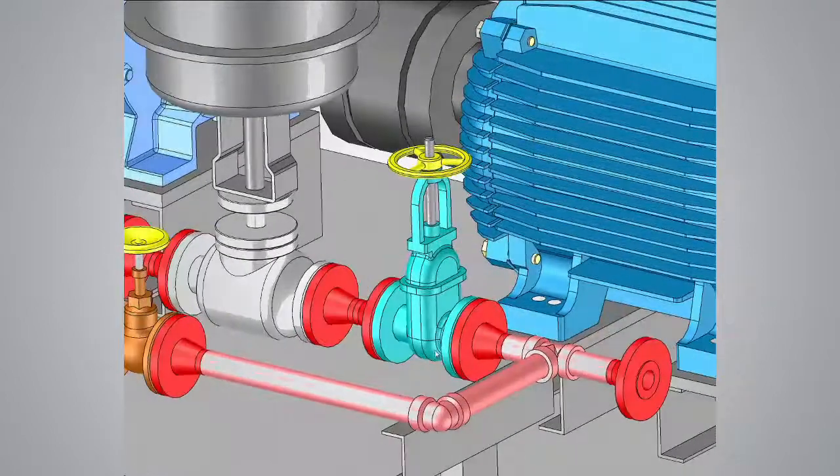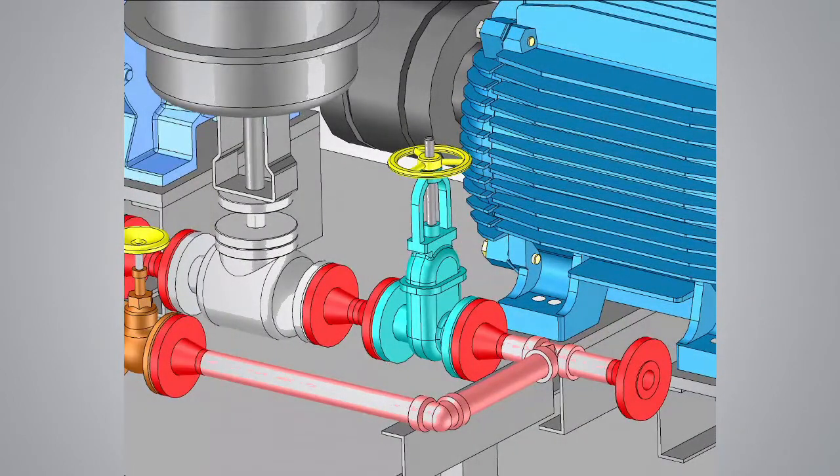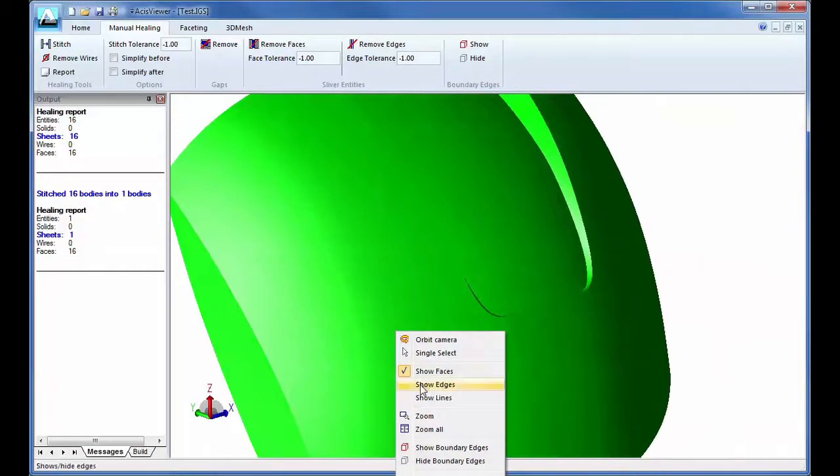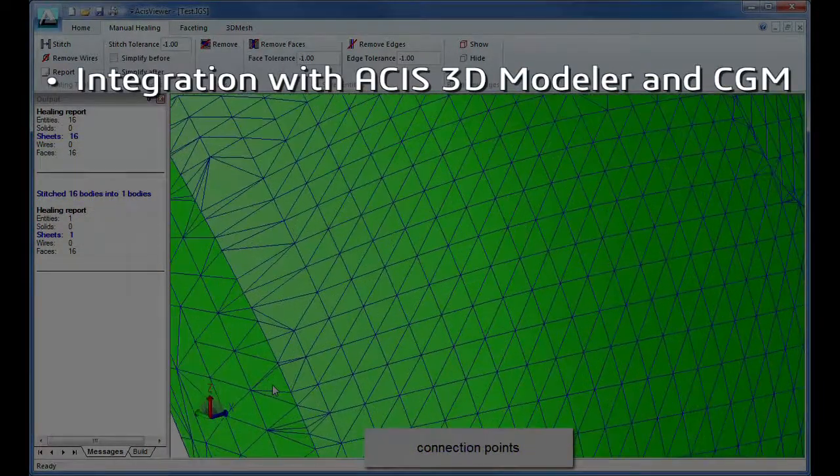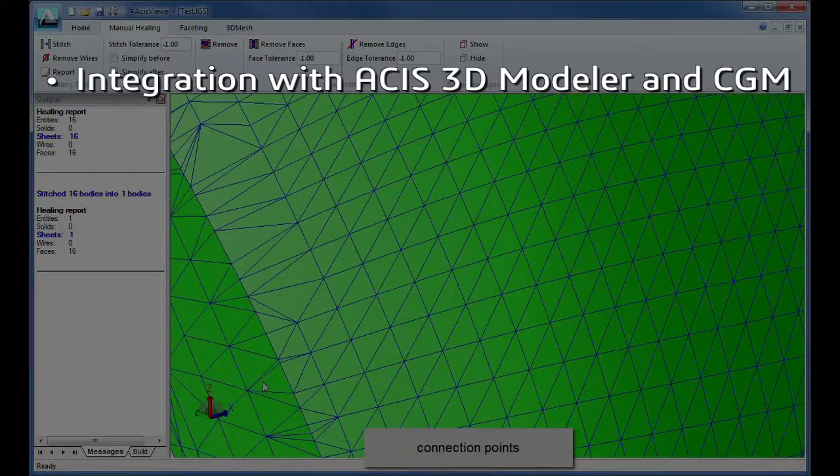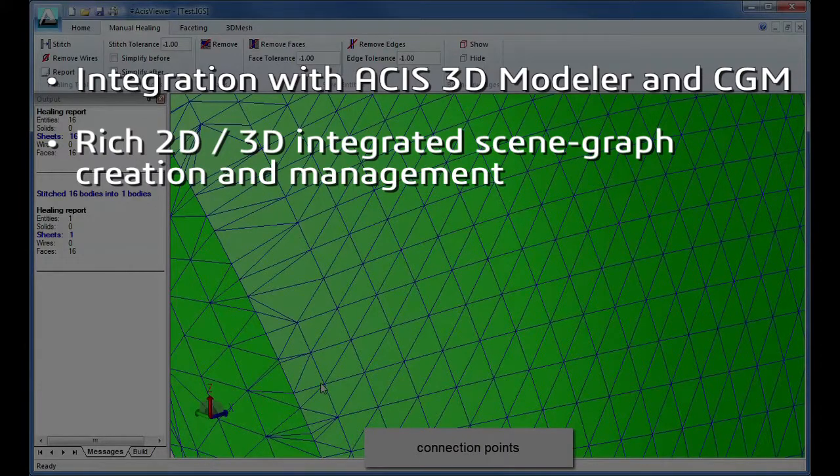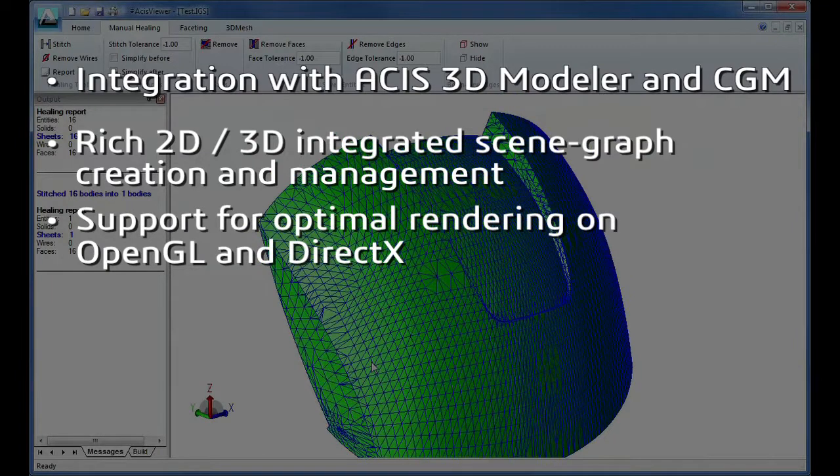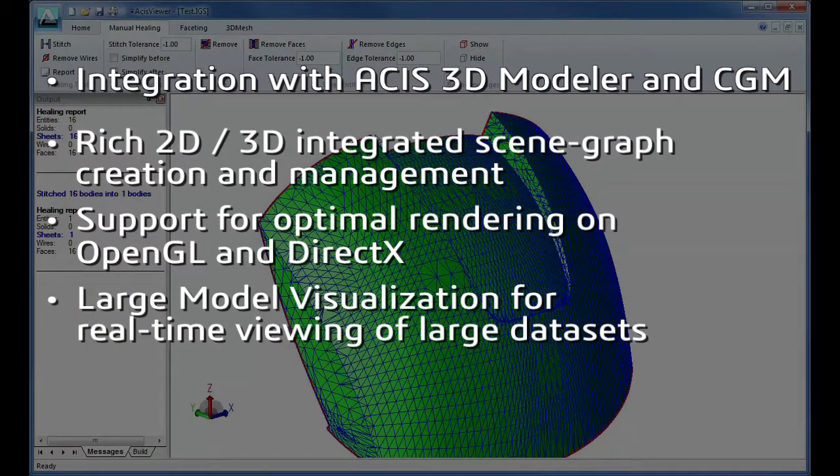Capturing market share with more timely releases of your software. Key features of Hoops Visualize include integration with Spatial's ACIS and CGM, rich 2D and 3D integrated scene graph creation and management, support for optimal rendering on OpenGL and DirectX, and large model visualization for real-time viewing of large datasets.